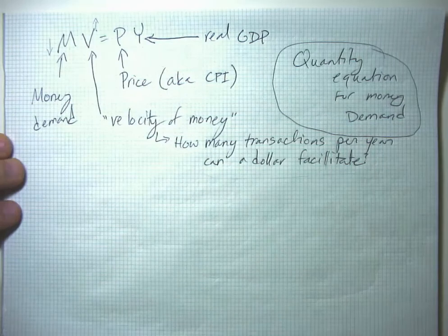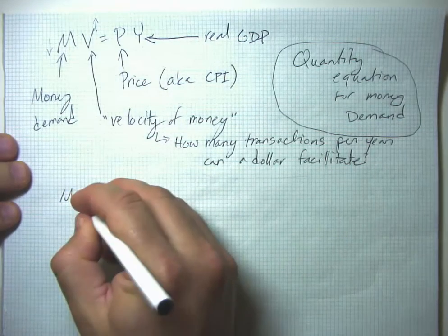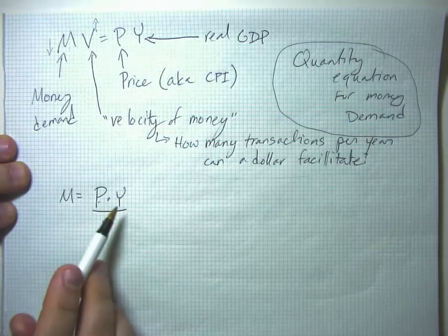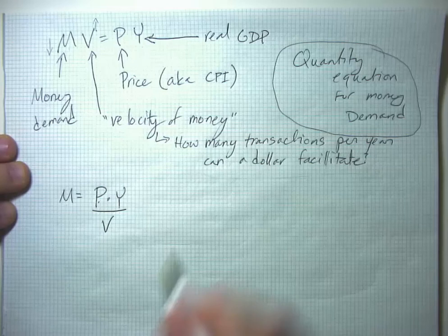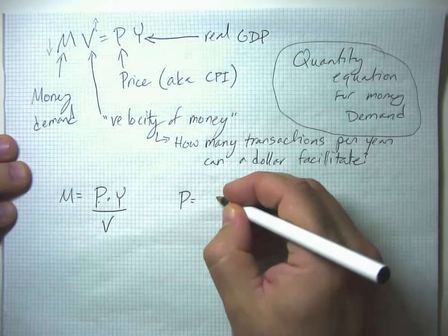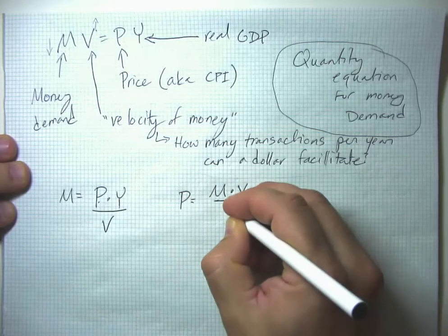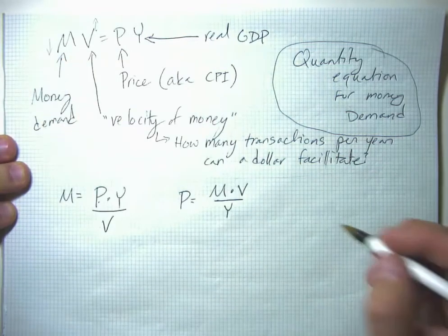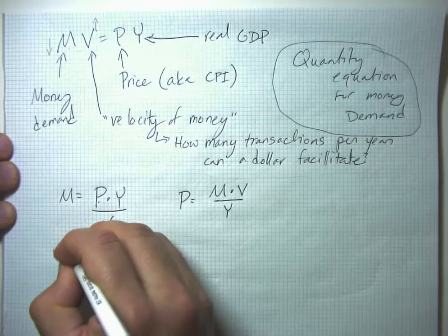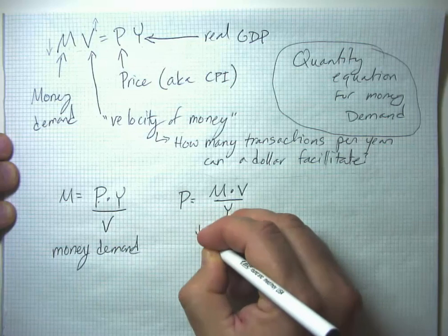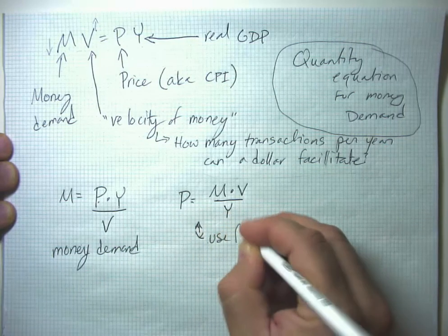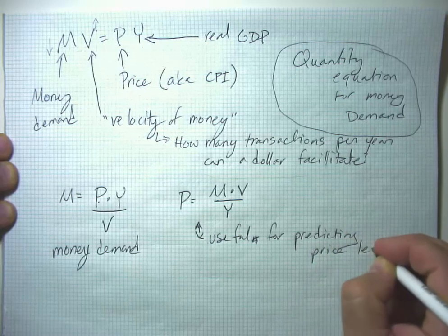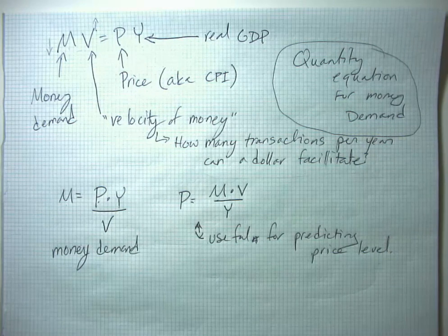Since this is algebra, we can manipulate the equation in a couple of ways. We can isolate money demand on one side: M = PY/V. This lets us predict money demand if we know the price level, GDP, and the velocity of money. Or we can rearrange to get P = MV/Y — dividing both sides by Y gives us a prediction for the price level if we know the other three variables.